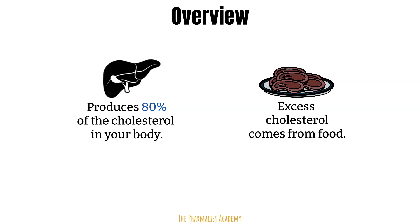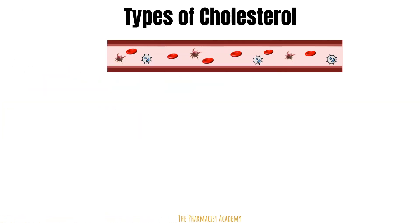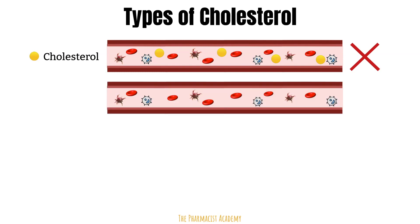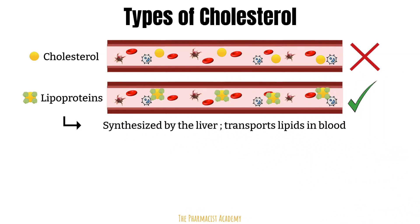There are two main types of cholesterol. Since cholesterol is lipid soluble, it cannot just float around in the blood. Instead, it's carried around by a special vehicle called a lipoprotein. A lipoprotein is made up of proteins and fats, produced by the liver, and its main function is to transport lipids and cholesterol through the blood. There are different types of lipoproteins, divided based on their lipid and protein composition. Lipoproteins are larger and less dense when the fat to protein ratio is high.